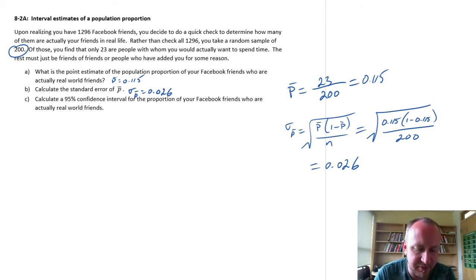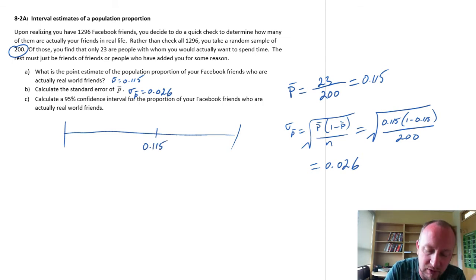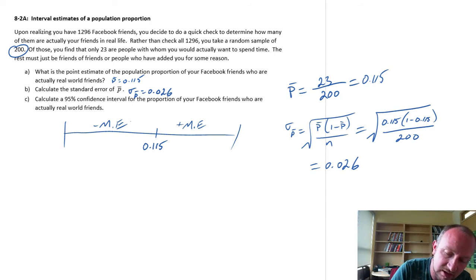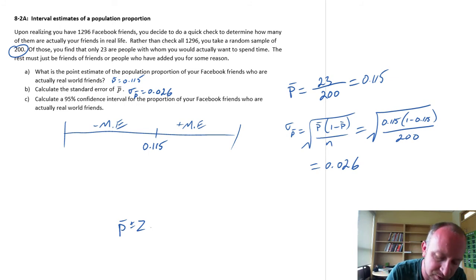Part C, calculate the 95% confidence interval for the proportion of your Facebook friends who are actually real-world friends. So here's what we have, we have our point estimate here, is 0.115, and so we need to figure out what are these margin of errors, right? This is plus margin of error, this is minus the margin of error. You'll notice this procedure, the process, is the same as when we were looking at population means, and the formula is very similar as well.